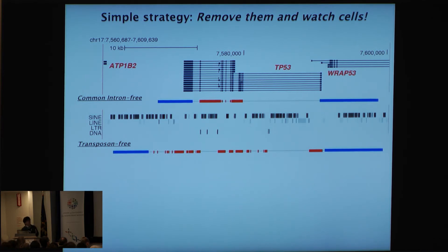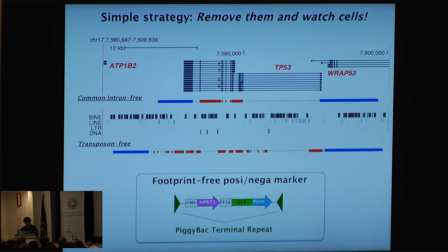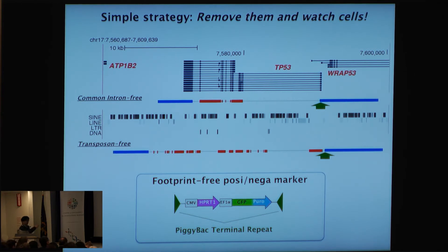In this case, we show the P53 gene. We want to see expression at the RNA level, and also protein level, and also epigenetic status, to see the effect of this junk DNA. We also need to use some marker to select out the genes which have the replacement, so we have made this kind of marker construct.